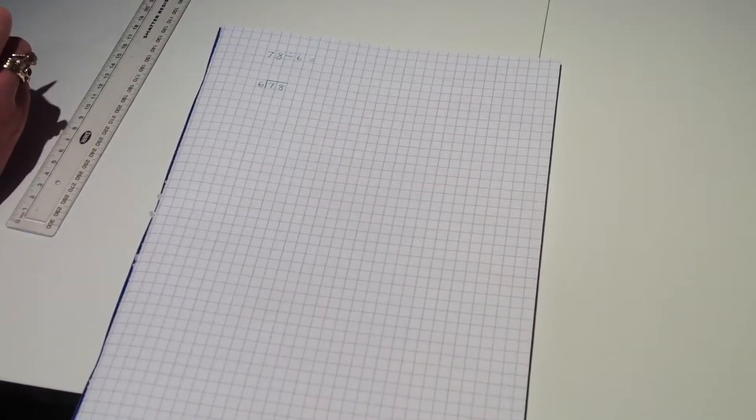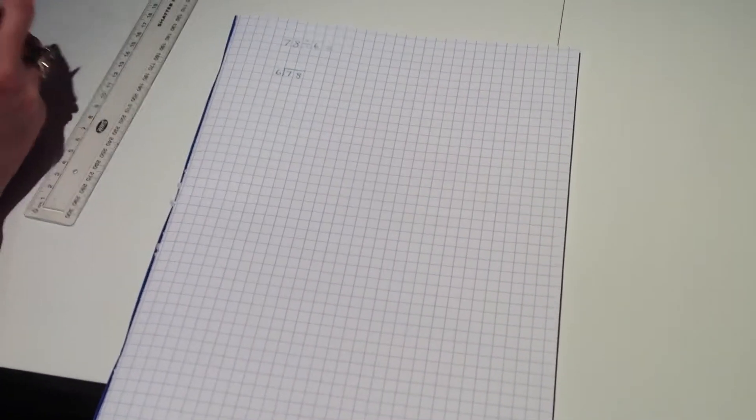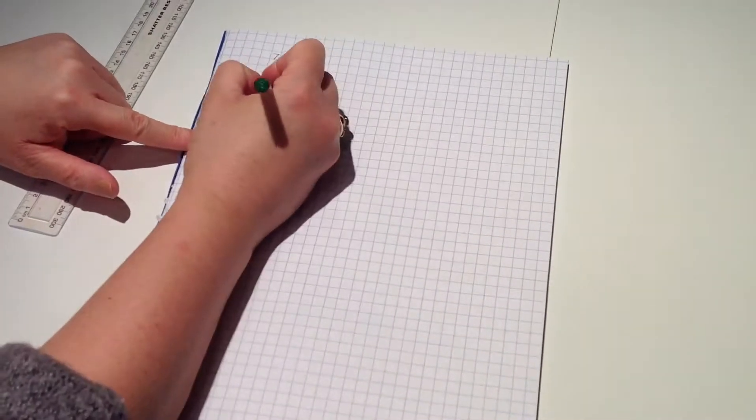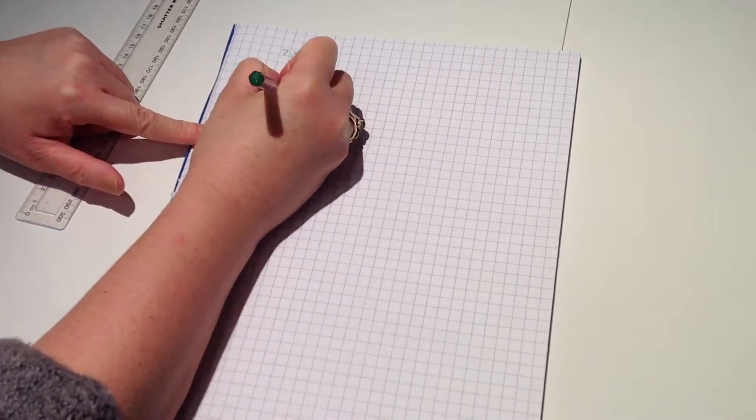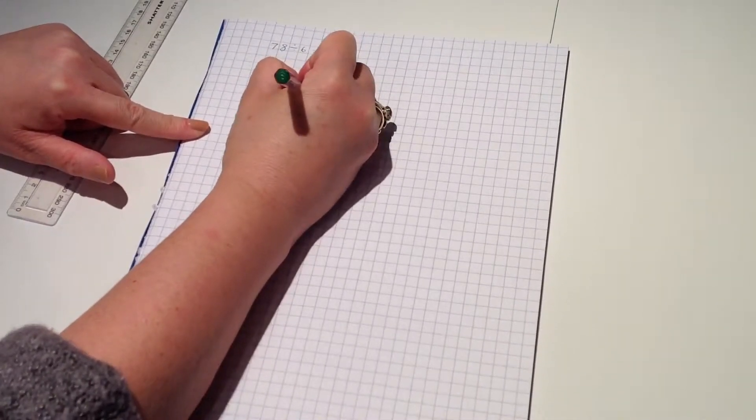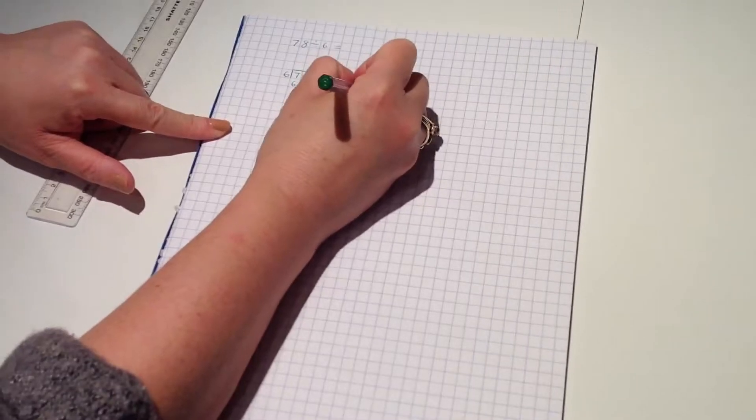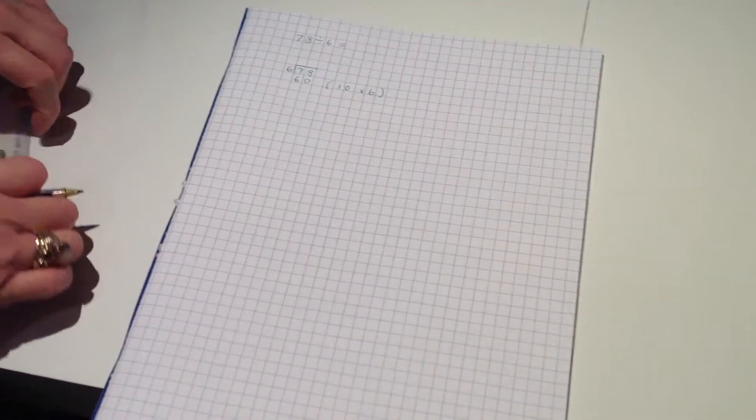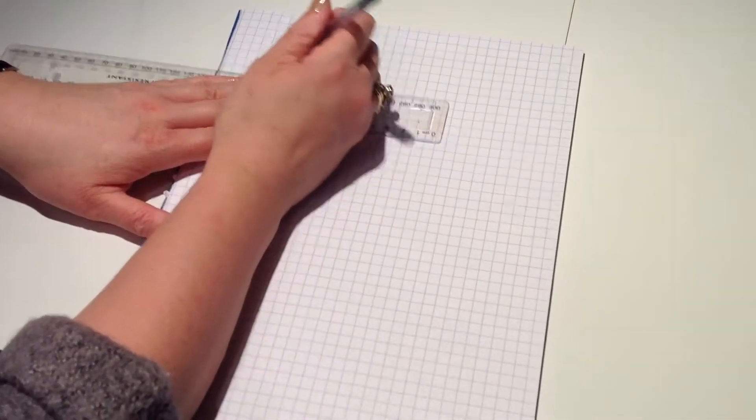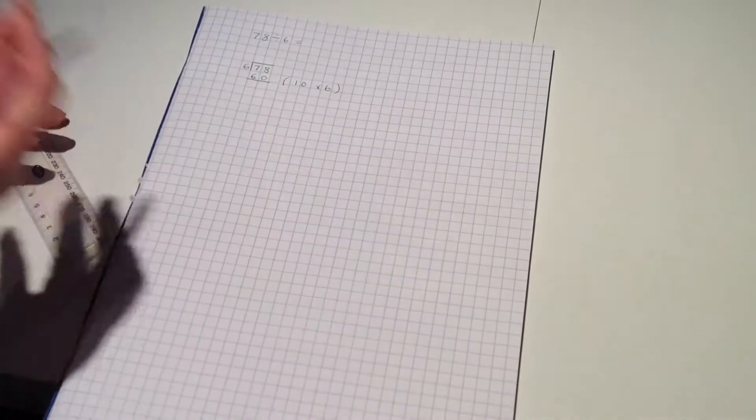So what I'm going to do is I'm going to use my bus stop method and I'm going to draw my bus stop just with two squares across because it's just a two-digit number. And I'm going to put the 78 in the bus stop because it's waiting to be divided and then I'm going to divide that number by six.